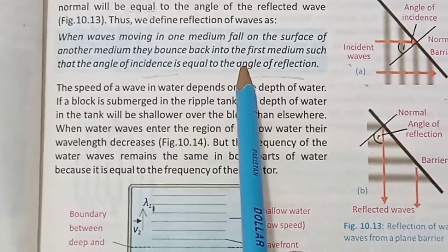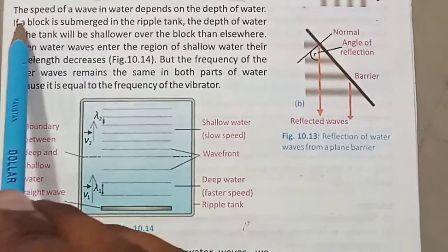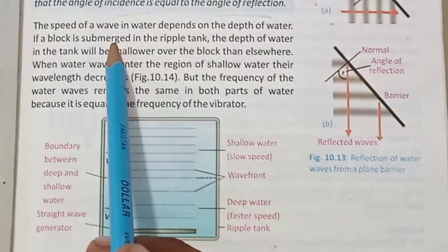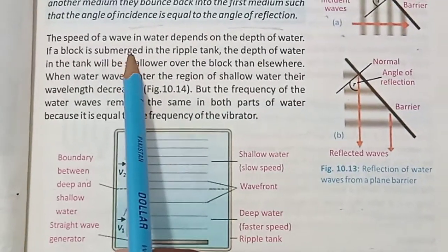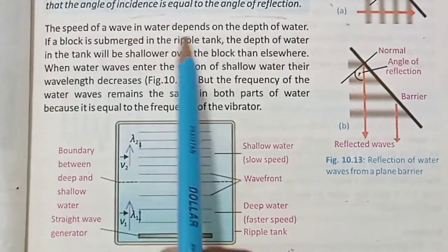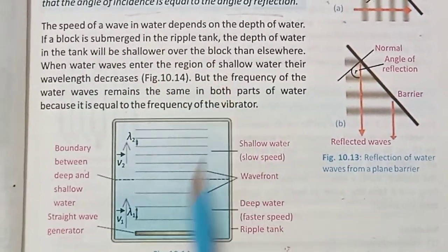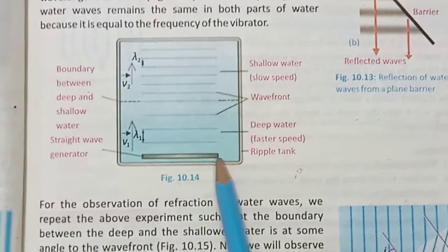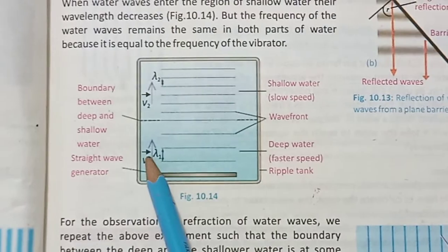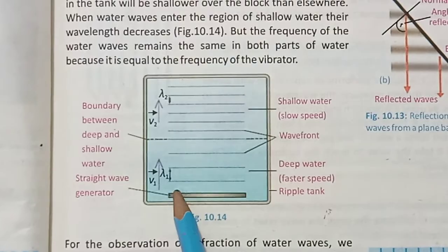Now we will check the speed of the waves. What happens if we change the speed? The speed of the wave depends on the depth of the water. If a block is submerged in the ripple tank, the depth of the water in that portion is reduced. The depth of the ripple tank over the block is reduced, affecting wave movement in that region.